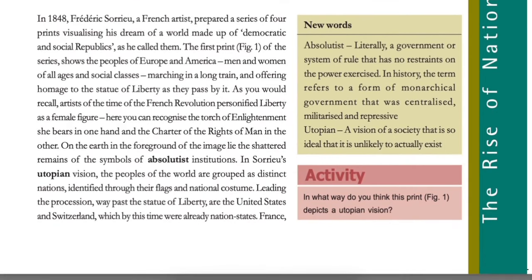In 1848, Frédéric Sauriau, a French artist, prepared a series of four prints visualizing his dream of a world made up of democratic and social republics, as he called them. The first print of the series shows the people of Europe and America — men and women of all ages and social classes — marching in a long train and offering homage to the Statue of Liberty as they pass by it.